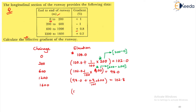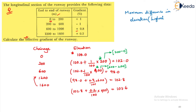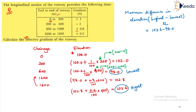The last elevation is 102.8 plus 0.2/100 multiplied by the difference of 400, giving 103.6. The maximum difference in elevation is the highest minus the lowest: 103.6 minus 98.0, which equals 5.6 meters.